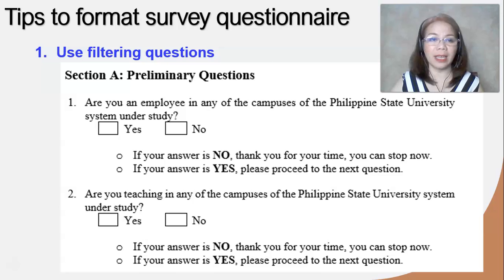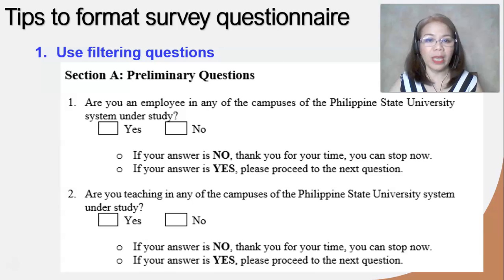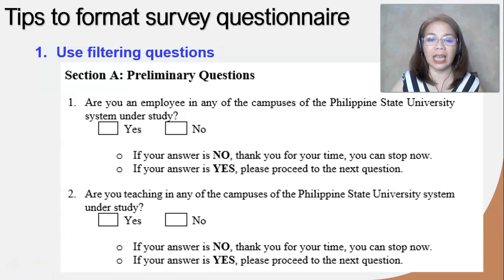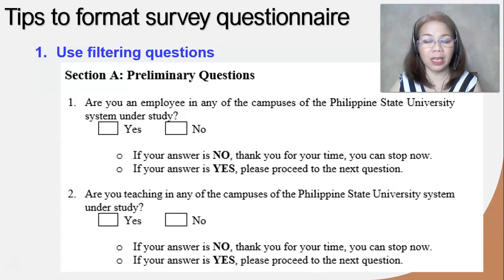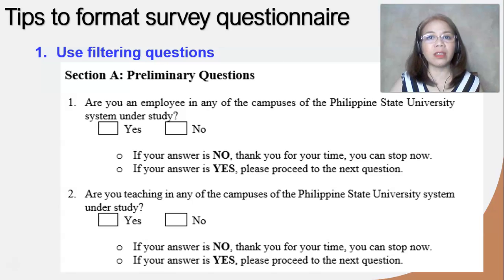For example, in my own study, I asked: 'Are you an employee in any of the campuses of the Philippine State University System under study? Yes or no? If your answer is no, thank you for your time. You can stop now. If your answer is yes, please proceed to the next question.' In this way, I can be sure that the respondents are employees of the Philippine State University under study and are teaching employees — meaning that staff, office staff, office clerks, janitors, security guards, and administrative personnel who are not teaching cannot answer the questionnaire because they are not the intended respondents.